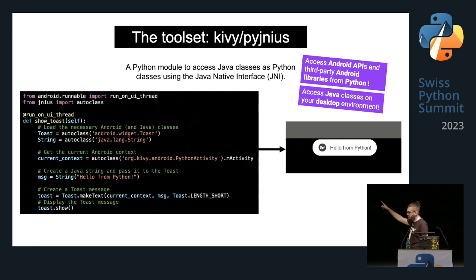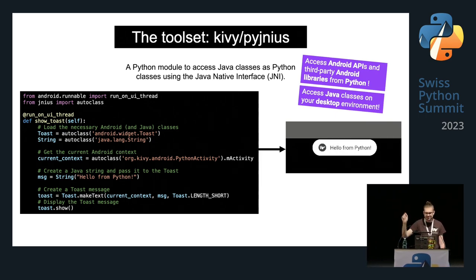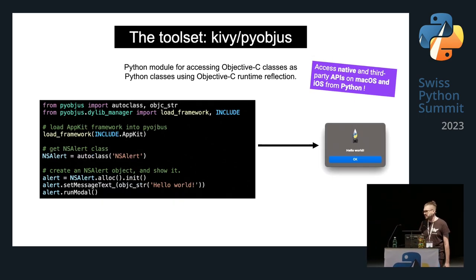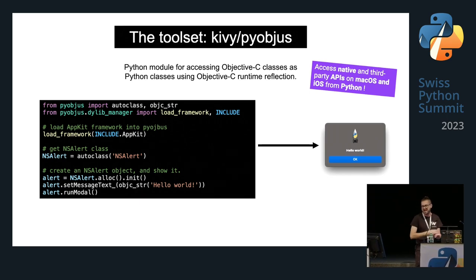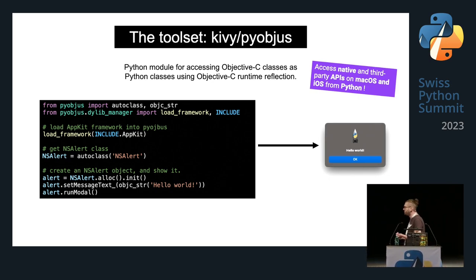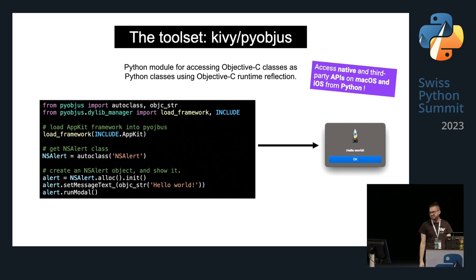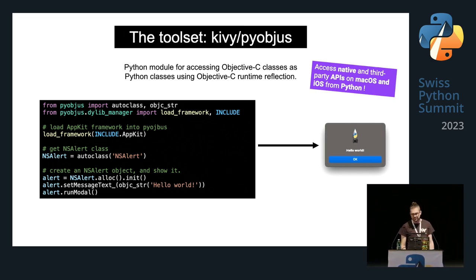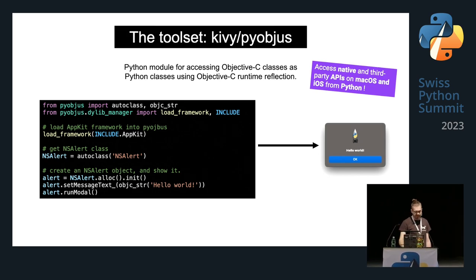The result on an Android phone shows a toast message saying 'Hello from Python.' Similarly, we have PyObjus. PyObjus is a Python module for accessing Objective-C classes as Python classes using Objective-C runtime reflection. With PyObjus, we can access native and third-party APIs on macOS from Python, again using the Autoclass helper.